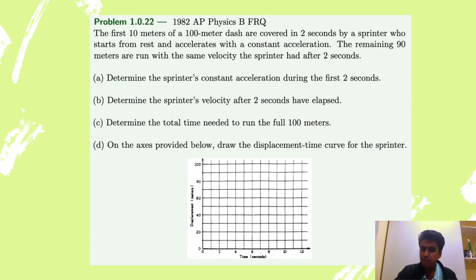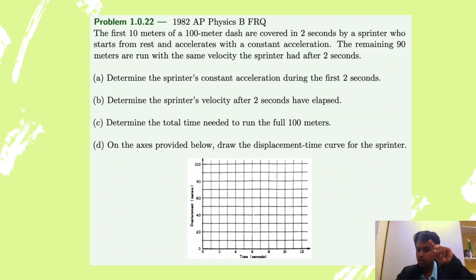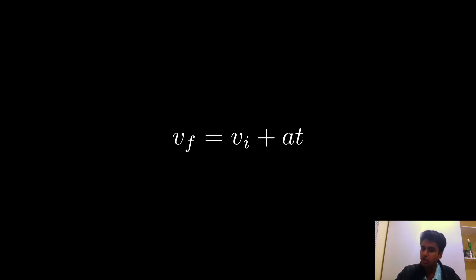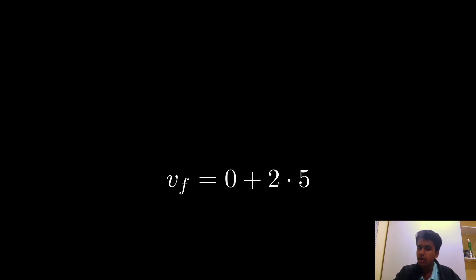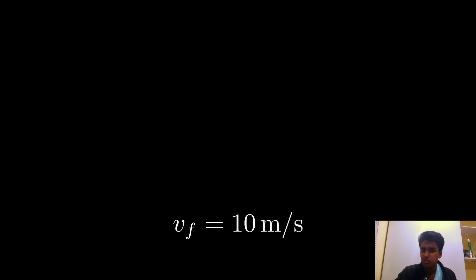Part B asks: what is the velocity after the first two seconds? We know the initial velocity, acceleration, and time. So we use: final velocity equals initial velocity plus acceleration times time. Plugging in zero for initial velocity, five for acceleration, and two for time, we get that the final velocity is 10 meters per second.